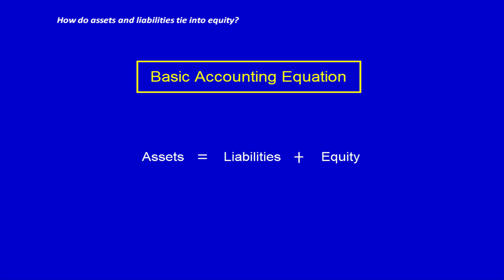Another way of thinking of this is that everything a business owns — their assets — have claims against it by third parties, liabilities, or owners, equity. This particular equation is called the basic accounting equation, and we'll be using it extensively throughout the remainder of our accounting courses.